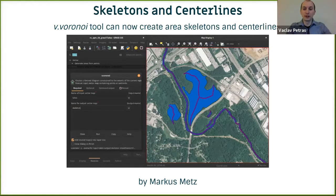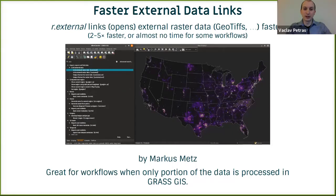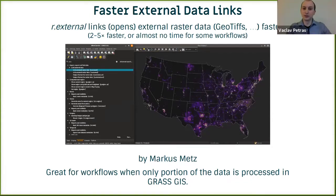There are many functional and algorithmic improvements in GRASS GIS. One example is generating skeletons and centerlines from Voronoi polygons for lakes and rivers. Another newly added feature is faster external data links. This is useful when you are using GRASS GIS for just part of your workflow — for example, using it as an API in a cloud application, or as part of a desktop workflow. These faster external links can help you process GeoTIFFs and other raster files in a much more efficient way.